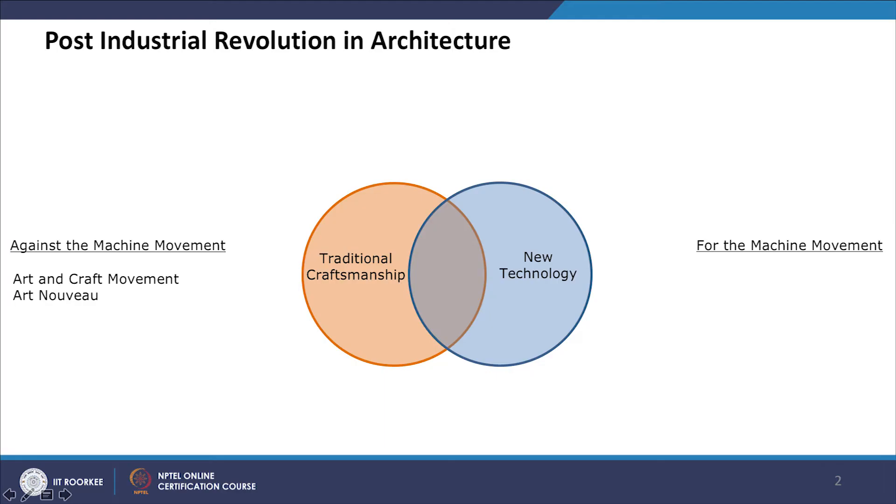Hello students, welcome to the online NPTEL course Contemporary Architecture and Design. In the previous lecture we started discussing the post-industrial revolution movements, and within that we have seen the for the machine movement and against the machine movement. We completed the for the machine movement and started the against the machine movement, discussing Art and Craft movement as well as Art Nouveau. We will continue today with the later part — other designers and architects of Art Nouveau and look at their visual expression.